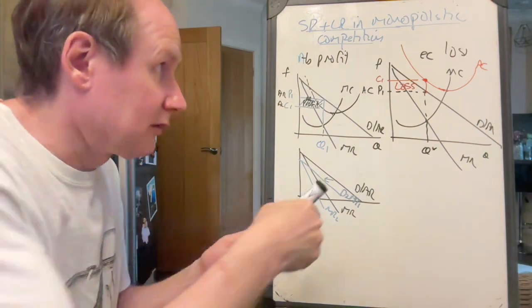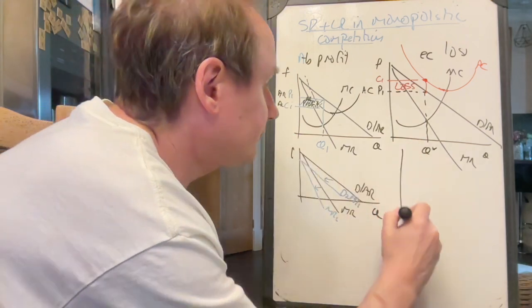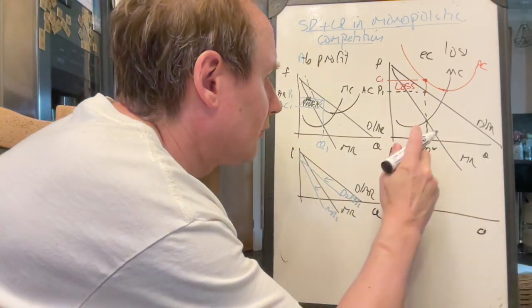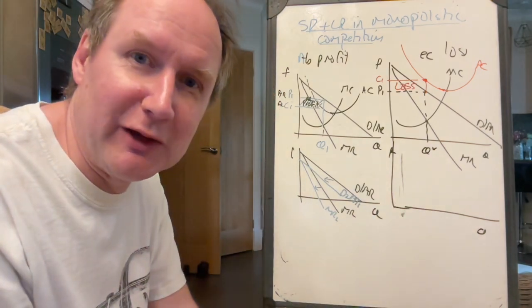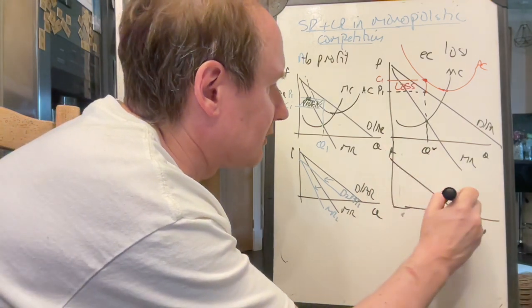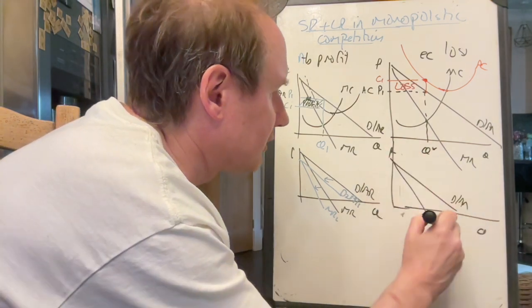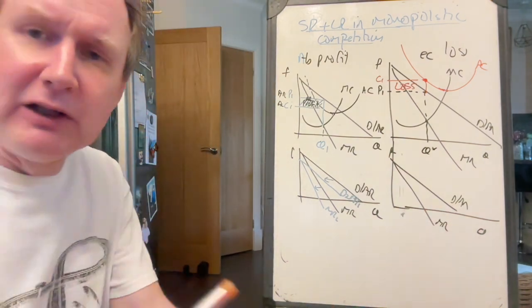In this case, where some firms are making a loss, of course, if we say, let's assume that our firm is one of the ones that remains, otherwise there isn't a diagram. Of course, what's going to happen is there was its original demand and its original marginal revenue.